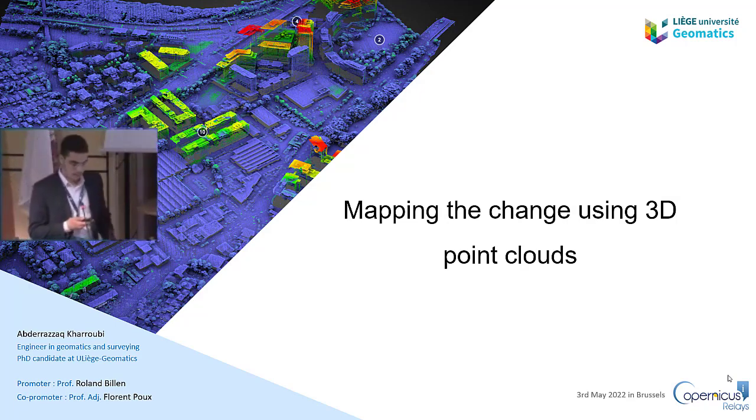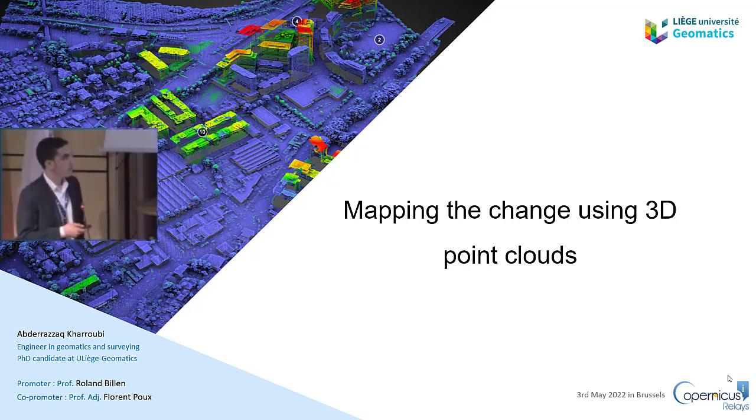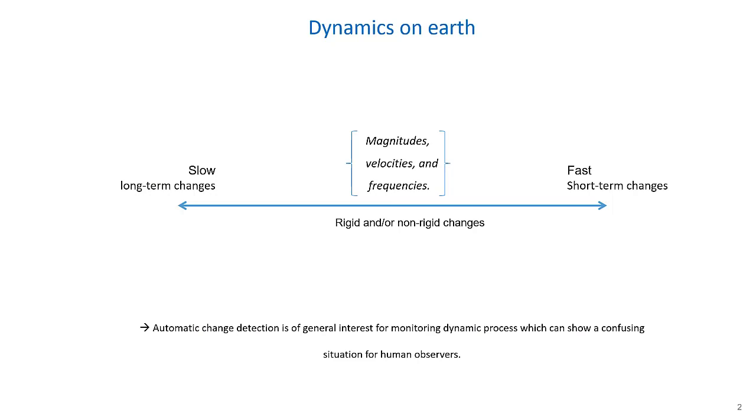Thank you for the kind introduction. Thank you to the audience for being here and thank you to the organizers for this opportunity to present my ongoing PhD thesis. As we navigate in a spatiotemporal world, everything on the surface of Earth is continuously changing. This change can range from slow change, which produces long-term changes, to fast change, which produces short-term changes. Every event on the surface of Earth has a different magnitude, velocity and frequency.